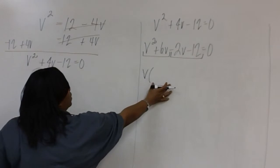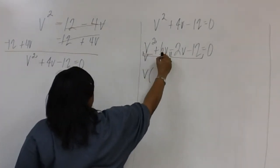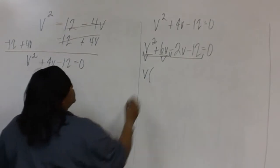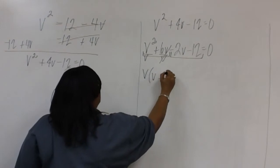To determine what goes inside the parentheses, we'll divide each of the terms by V. These Vs cancel, and we're left with V plus 6.